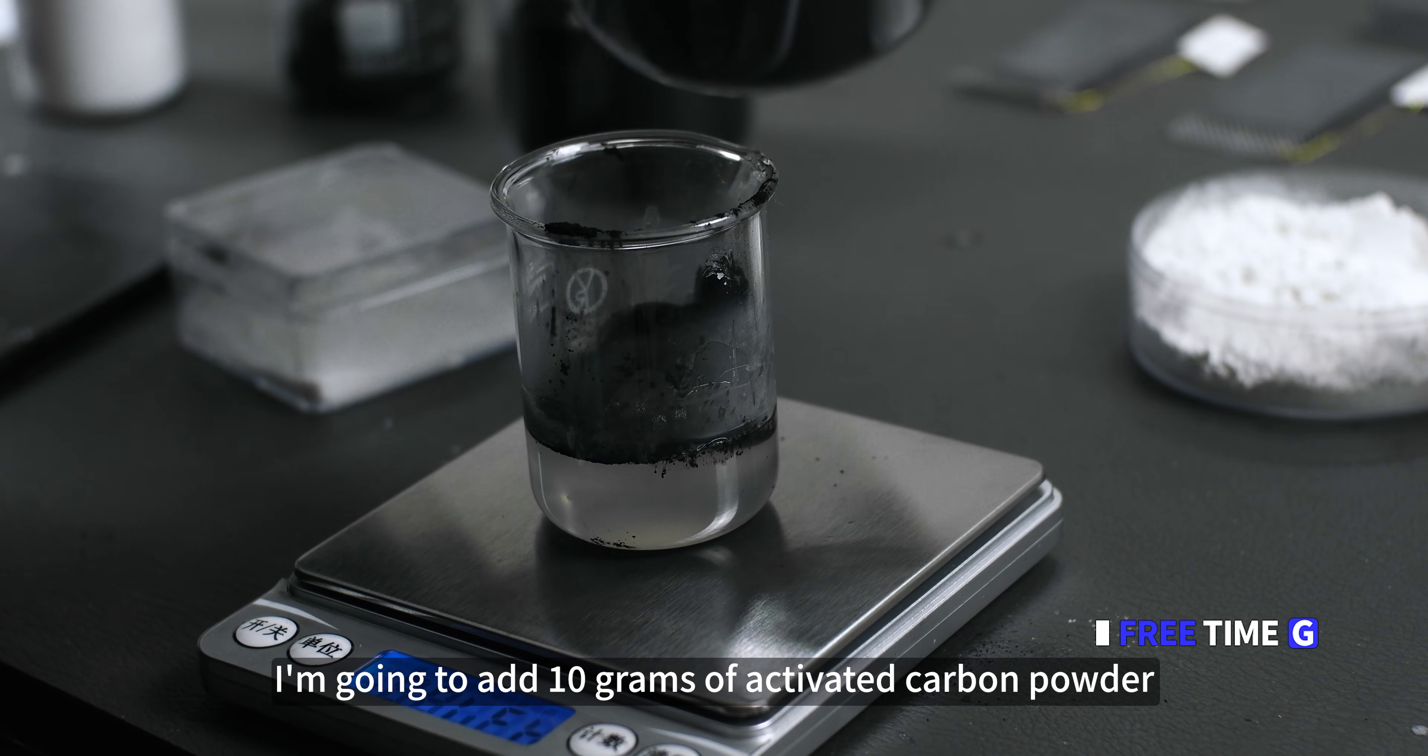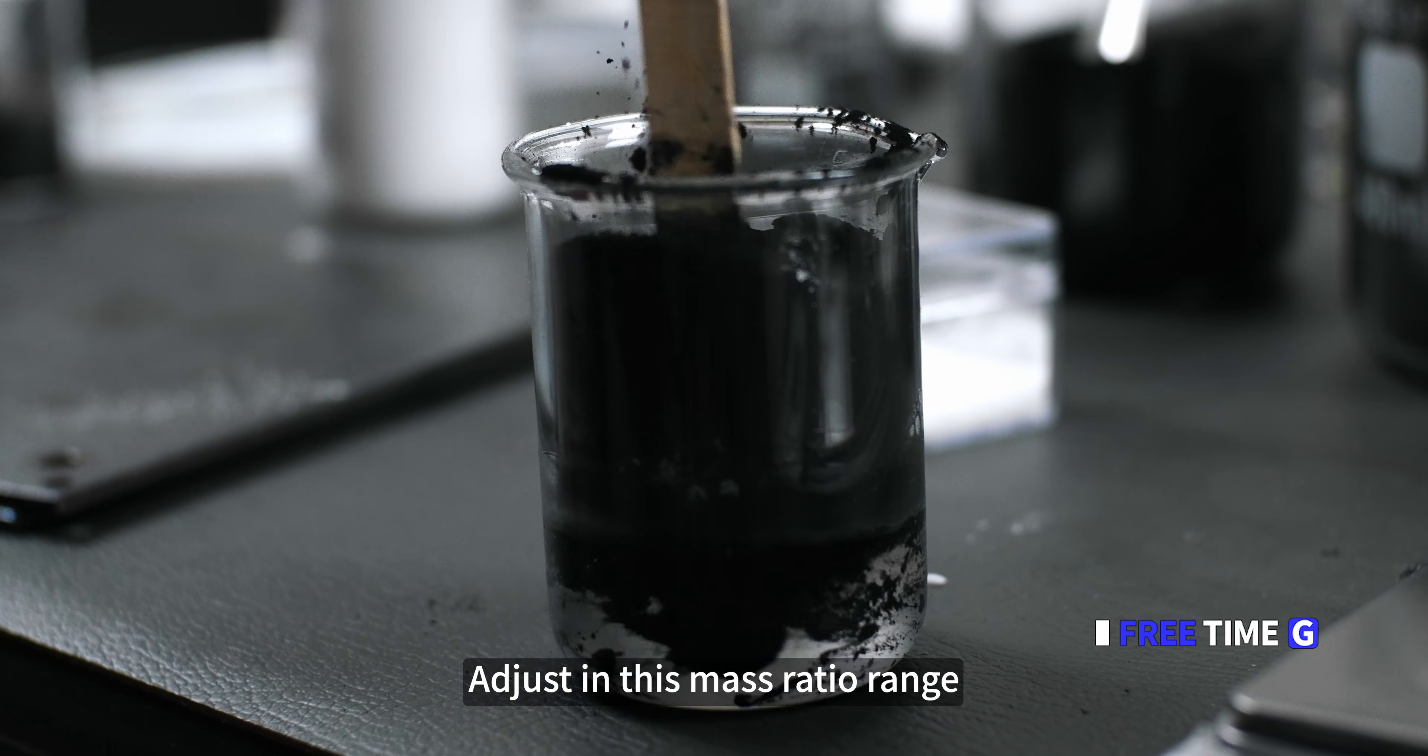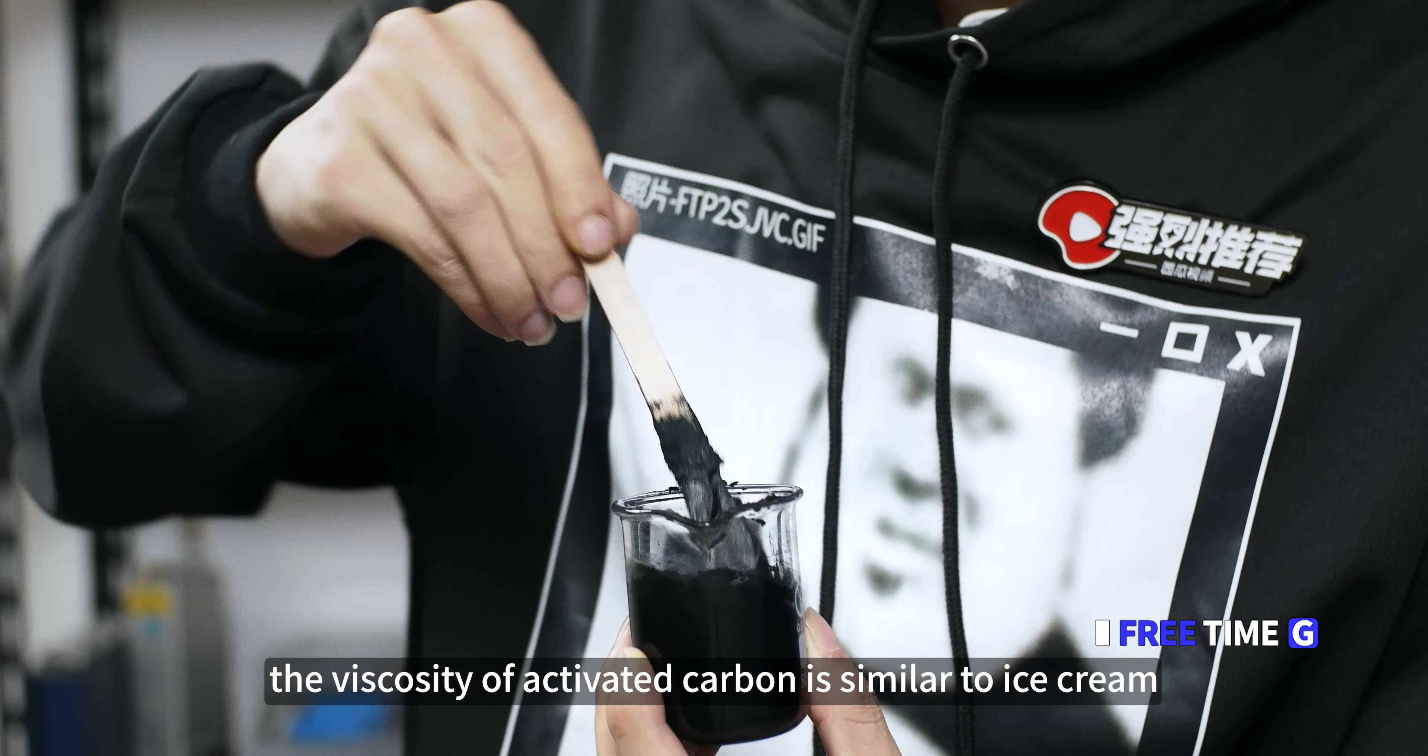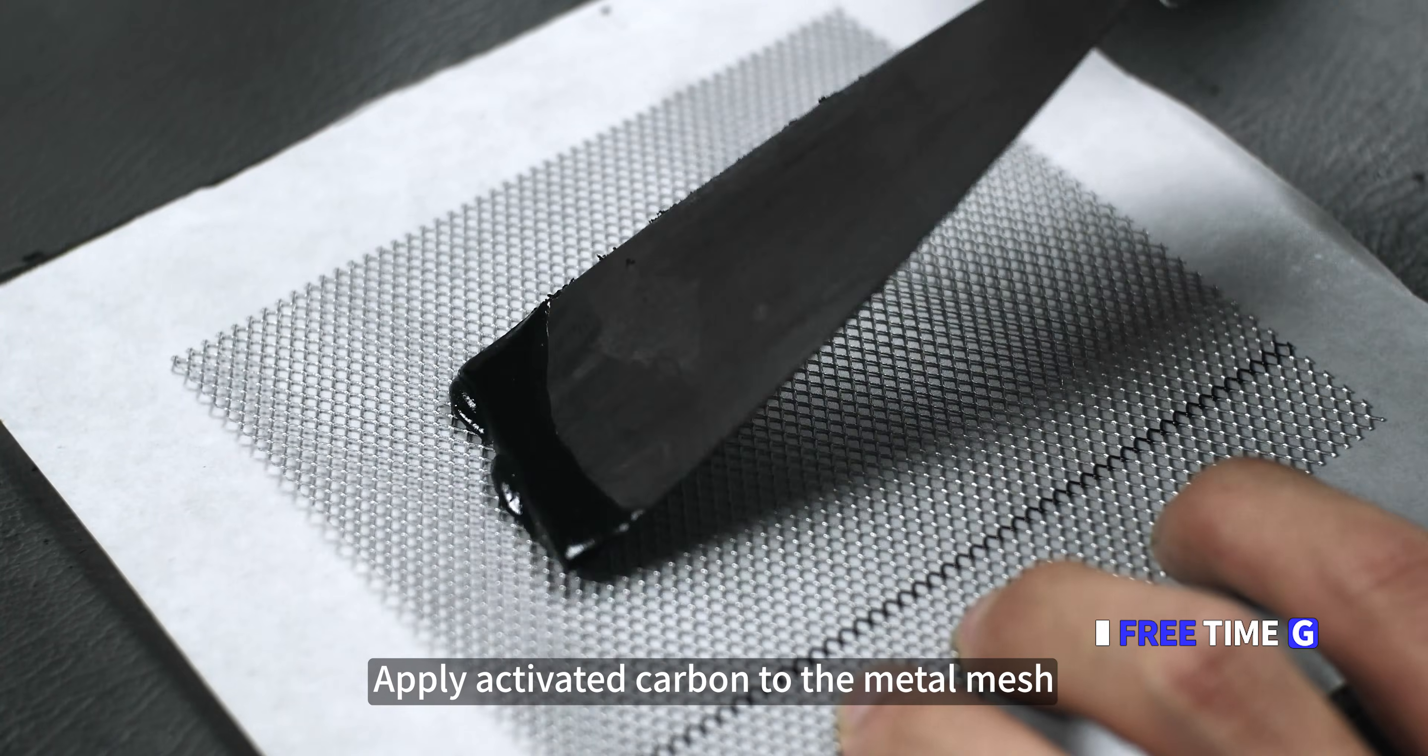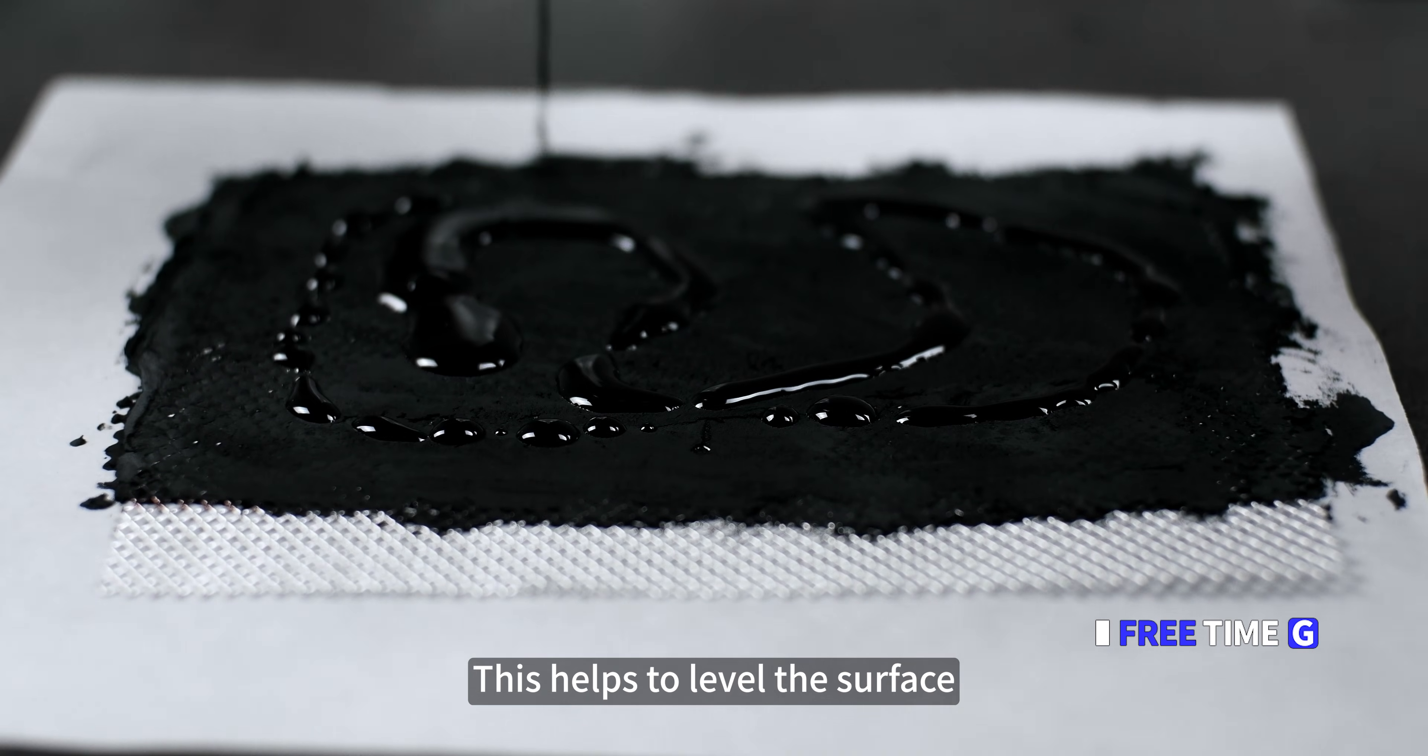For example, I use 3 grams of foam. I'm going to add 10 grams of activated carbon powder. The proportion of plastic is high, will affect the electrode output efficiency. A low percentage of plastic will affect electrode strength. See the usage scenario. Adjust in this mass ratio range. If acetone is not enough, add more. Make sure to wet it completely. Stir for about a minute. When applied, the viscosity of activated carbon is similar to ice cream. Save cost by using stainless steel mesh. Silicone oil paper needs to be placed under the metal. This demolding is very smooth. Apply activated carbon to the metal mesh. Paint the other side. Pour a thicker active slurry onto the surface. This helps to level the surface.